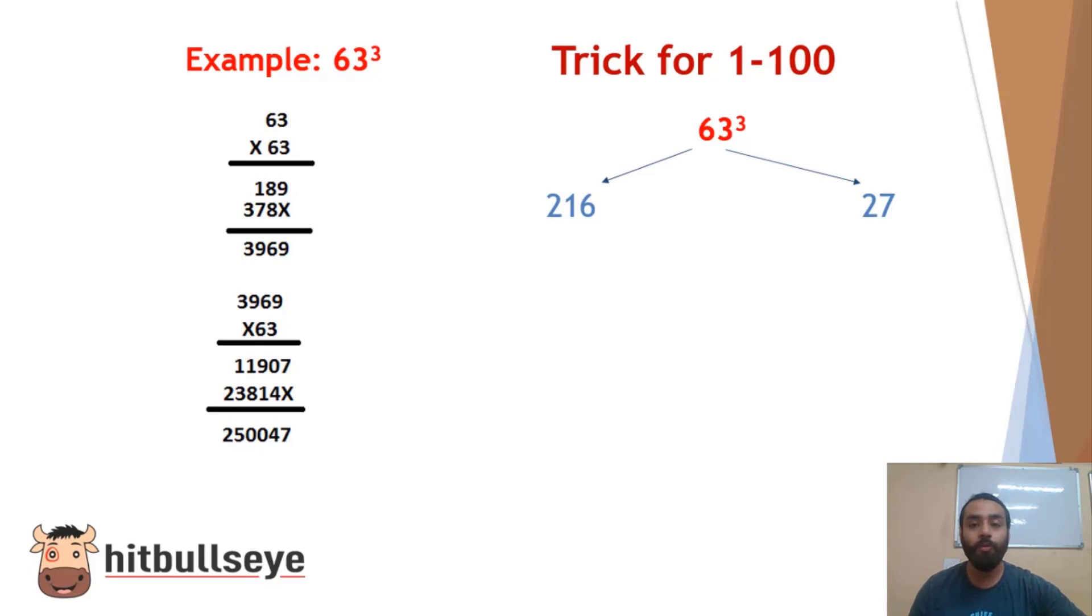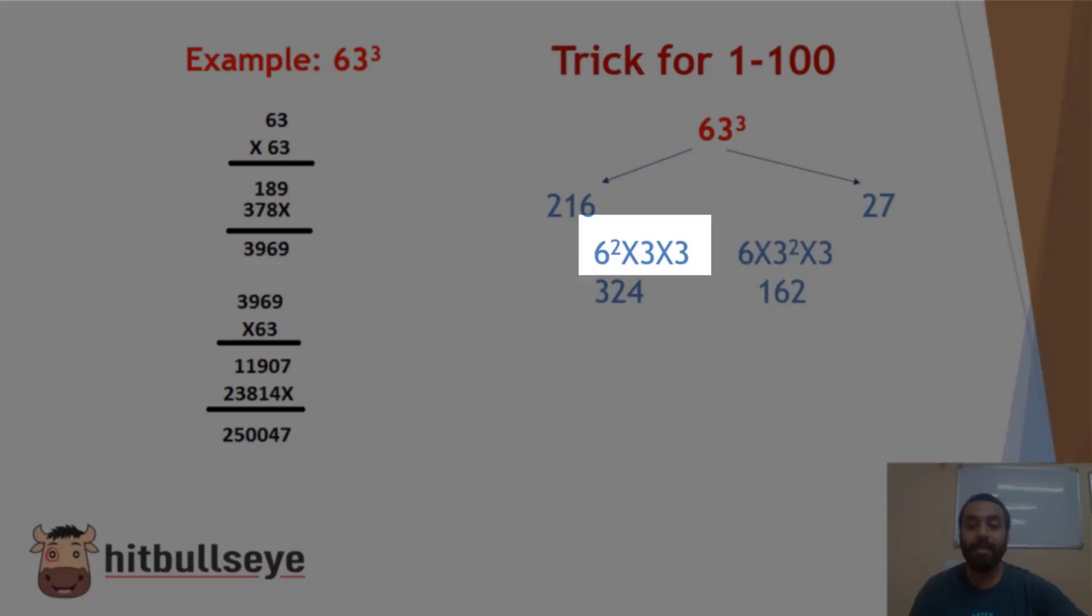We have a cube of these two numbers. So we have a cube of one side that will be 216, on the other side we will take the cube of 3 that will give us 27. Now in the middle part what we have to do: the square of first number that is 6 multiplied by the next number multiplied by the raised to the power that is 3.